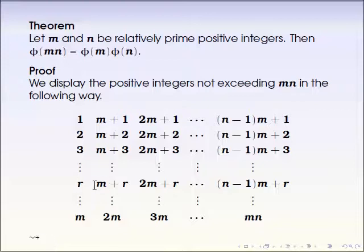Then look at this. This one cannot be relatively prime with mn. Can you see that? Because if r is not relatively prime with m, which means there is a common divisor for r and m, which is not one. So let's say that is d. Then d is also a divisor of that number, because d is a divisor for r and m, right? So it's a common divisor.